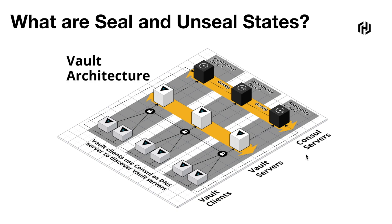In the sealed state, vault is configured to know where and how to access the physical storage, but it doesn't know how to decrypt any information stored there. Unsealing is a process of obtaining the plaintext master key necessary to read the decryption key to decrypt the data, allowing access to the vault. Prior to unsealing, almost no operations are possible — for example, authentication and managing secret engines are not possible.